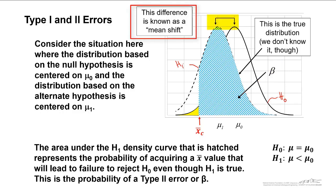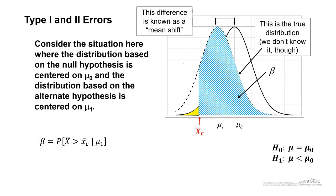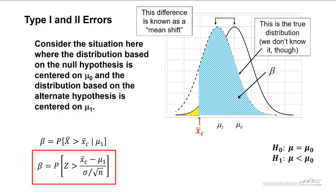The difference between the null distribution and the assumed alternate distribution is known as a mean shift, or a shift in the mean. In order to calculate a numerical value for beta, the type 2 error, that is equal to the probability that our sample average is greater than x bar c given that the mean really is mu 1. We can write something similar for an upper tailed test. We can also standardize by converting x bar critical based on the alternate distribution centered about mu 1 into a z value. In the next screencast I am going to go through an example of how we can calculate numerical values for beta.